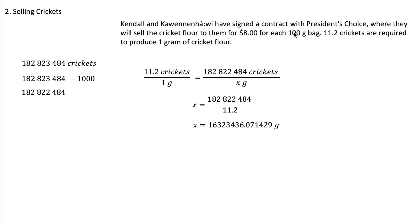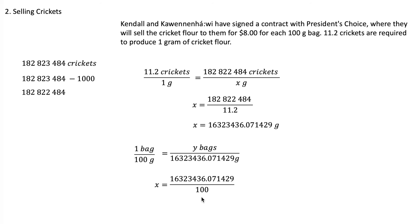Then we divide by 100 to figure out how many bags we have, since one bag is 100 grams. Using ratios, we divide 16,323,436 by 100, which moves the decimal point back twice. That gives us 163,234.36 bags. Since you can't sell a fraction of a bag, we round down to 163,234 bags of cricket flour to sell.